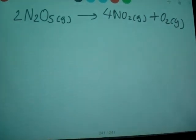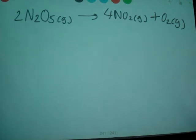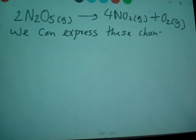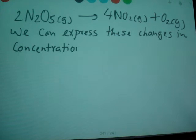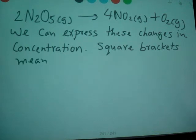Let's say we have 2 moles of N2O5 gas, which gives 4 moles of NO2 gas and 1 mole of oxygen gas. We can express these changes in concentration. Square brackets mean molarity.